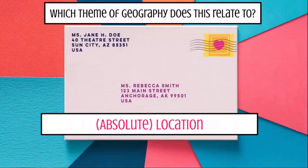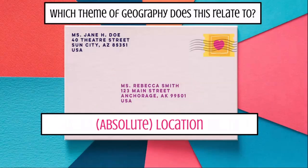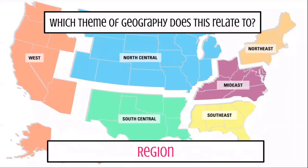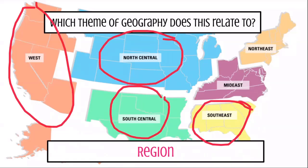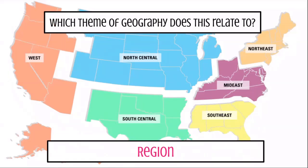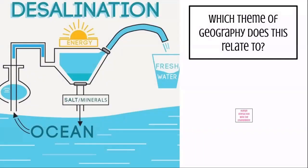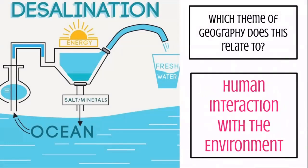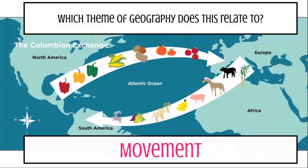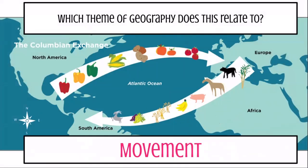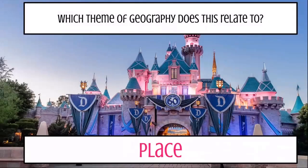Let's review the answers. The postcard or letter with an address is absolute location — if you just wrote 'location,' that's completely fine. The map showing regions of the U.S. — west, north central, south central, south, east, midwest, northeast — is region. Desalination, where you take salty water and transfer it into fresh water, is human interaction with the environment. The Columbian exchange — the exchange of goods from the new world to the old world and back — is movement. And Disneyland is place.